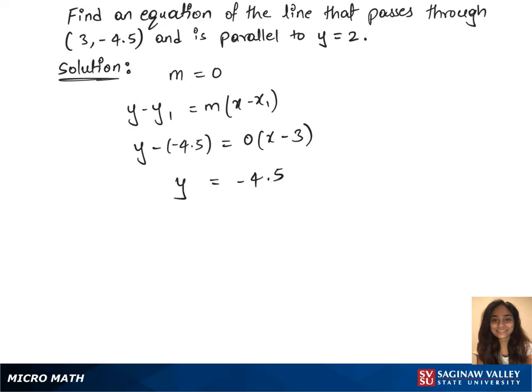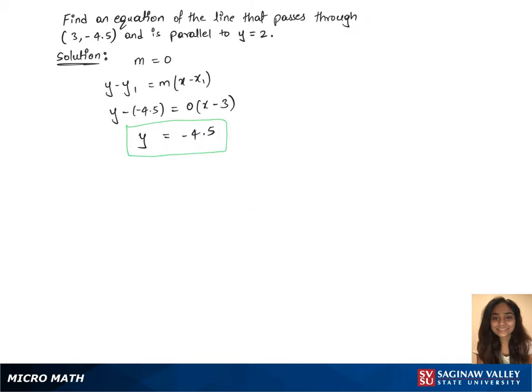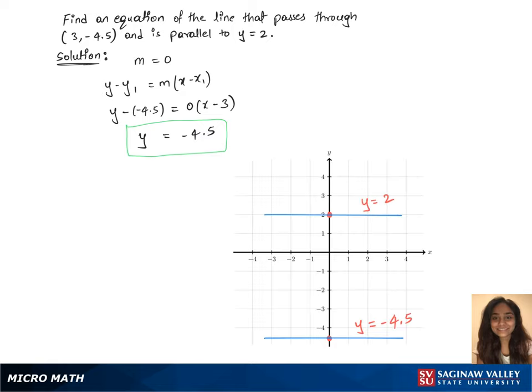Now we'll have y equals minus 4.5. So that's the equation of the line which is parallel to y equals 2, and the graph for both lines looks like that.